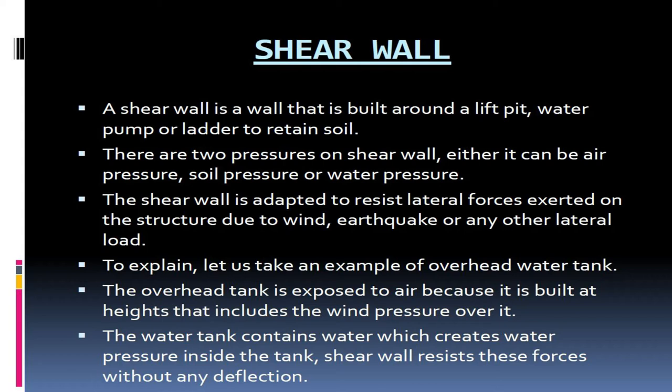Shear wall. A shear wall is a wall that is built around a lift pit, water pump, or ladder to retain soil. There are two pressures on a shear wall: either air pressure, soil pressure, or water pressure. The shear wall is adapted to resist lateral forces exerted on the structure due to wind, earthquake, or any other lateral load. For example, an overhead water tank is exposed to air because it is built at heights, which includes wind pressure over it. The water tank contains water which creates water pressure inside the tank. Shear wall resists these forces without any deflection.